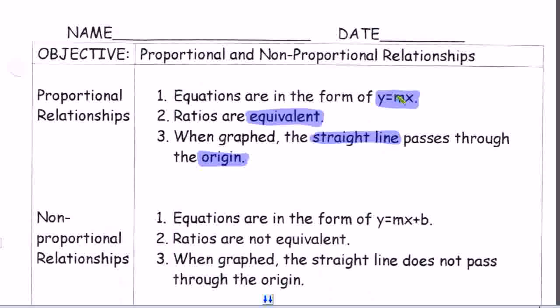The equation needs to look like y equals mx. The ratios have to be equivalent. And when you graph it, it has to be a straight line that passes through the origin. The origin is that point where the x and the y-axis meet in the center.